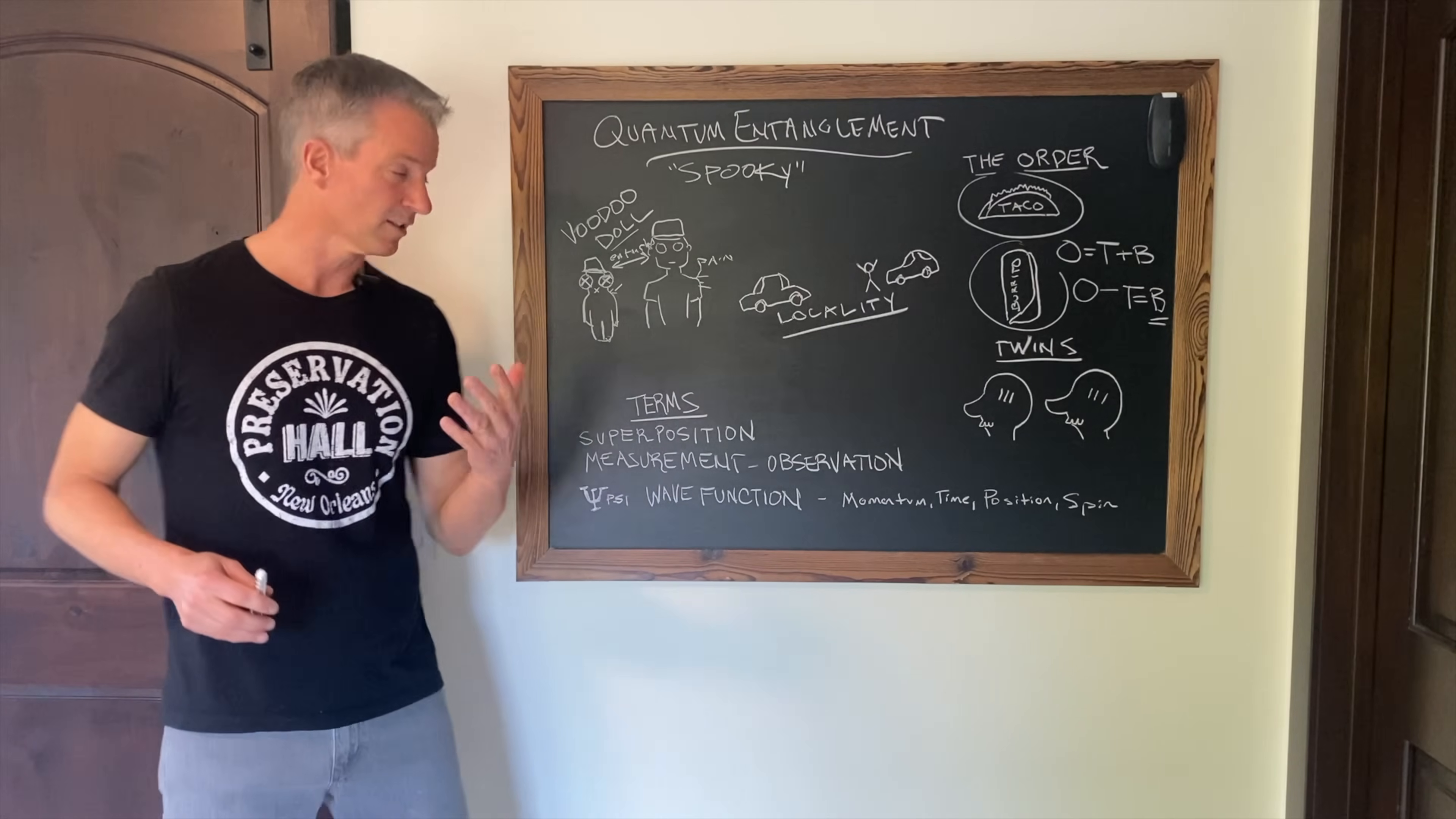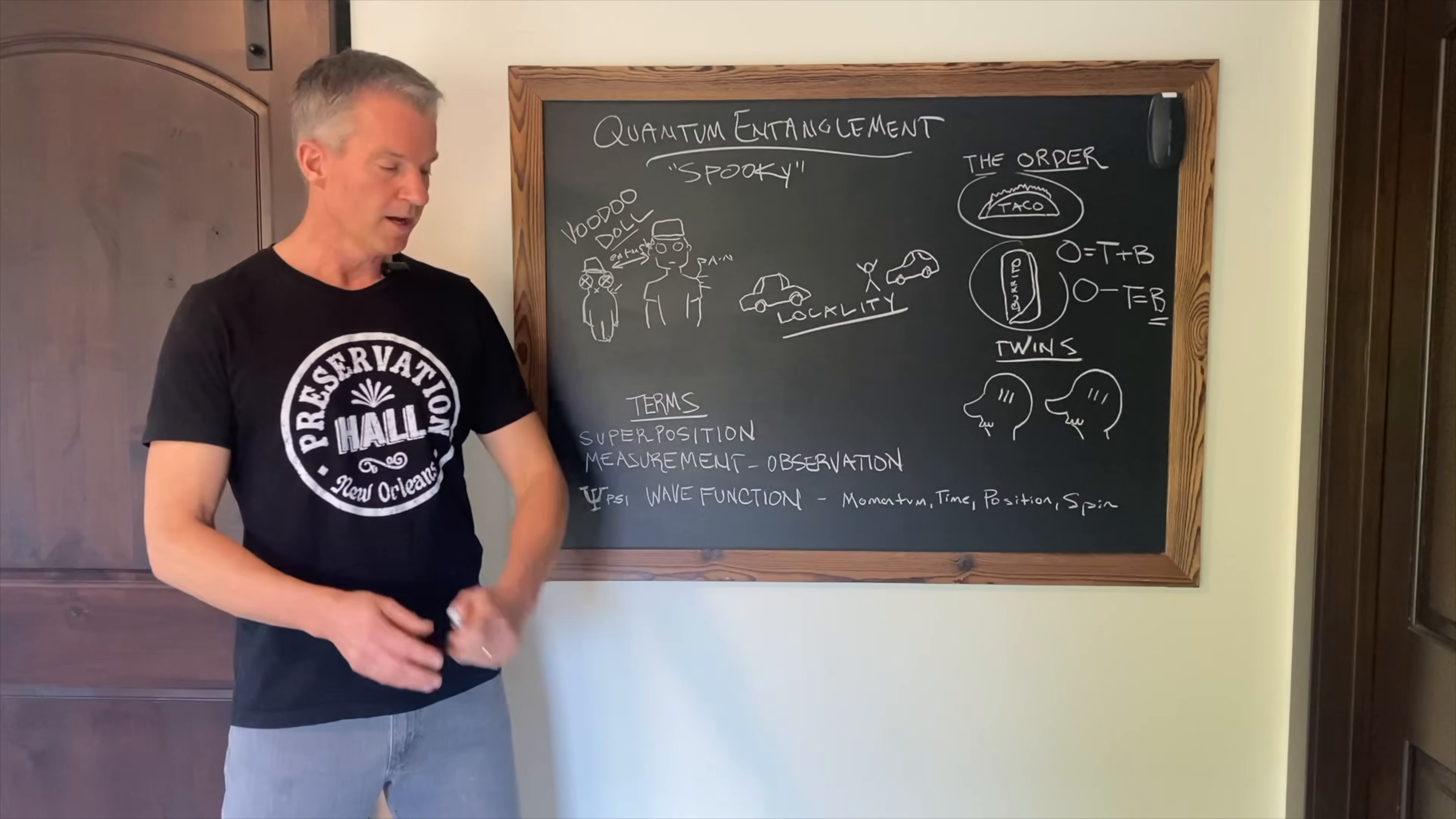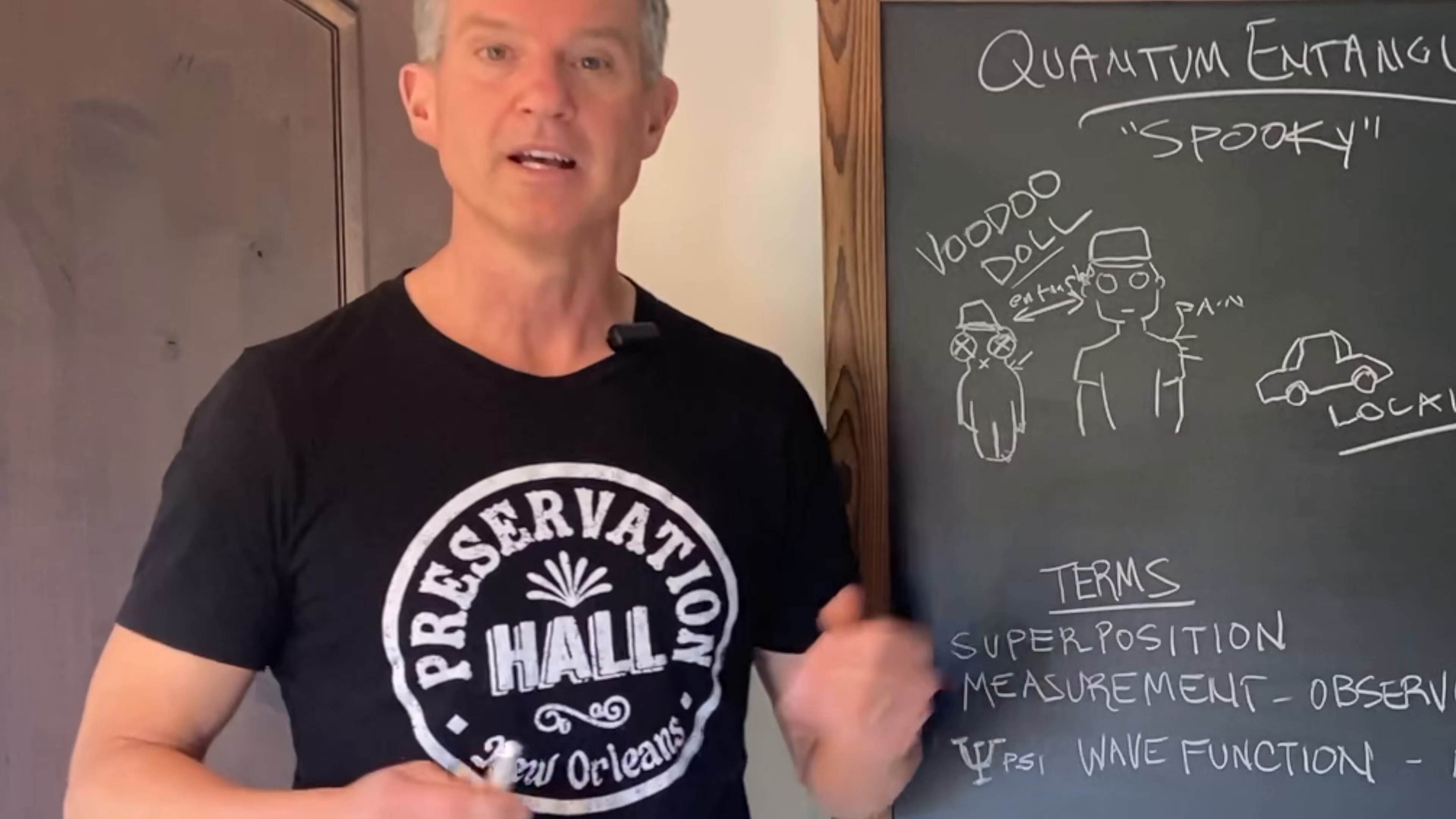Once they became entangled, what happened to one instantly affected the other. And also for the sake of the analogy, it doesn't really matter if the doll is on Venus and the person who it represents is in the Kuiper belt somewhere. When that pin is stuck into the doll, the person immediately feels pain. It is, according to the common understanding of voodoo, instantaneous.